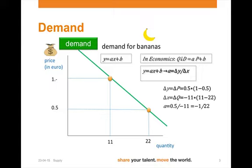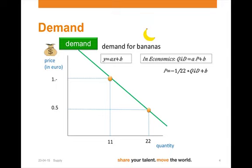The gradient, a, is therefore 0.5 divided by minus 11, which gives minus 1 over 22. So if we fill that in, we get p equals minus 1 over 22 times the quantity demanded plus b.